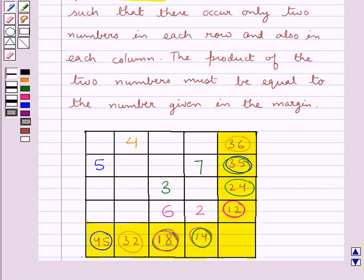Now we have number 8. The two smallest multiples of number 8 are 24 and 32. The square corresponding to these two numbers is this square, so we place number 8 here.